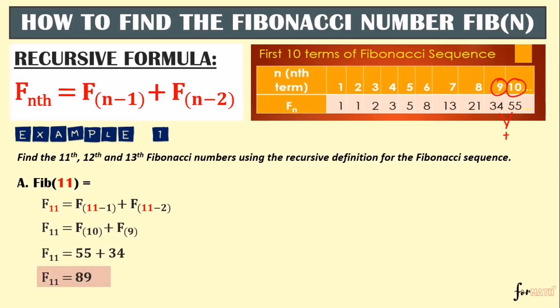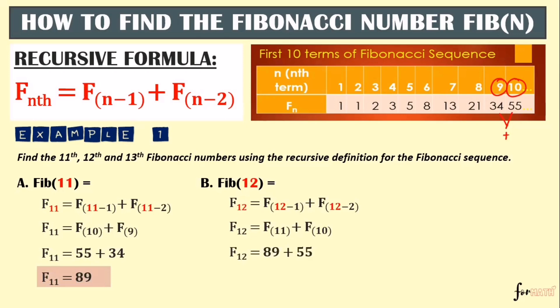Next is the 12th term. Using the recursive formula, substitute n = 12: we have F(12-1) + F(12-2), so we need the 11th term and the 10th term. Since we already found the 11th term as 89, and the 10th term is 55, we add them. So the 12th term is 144.